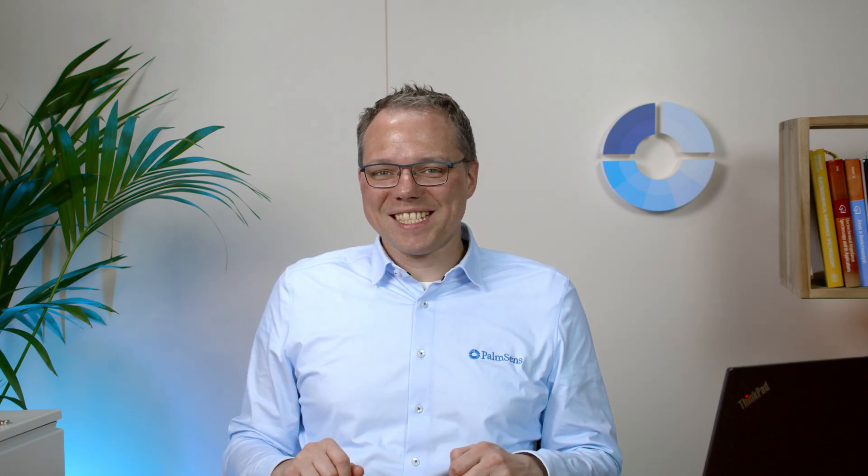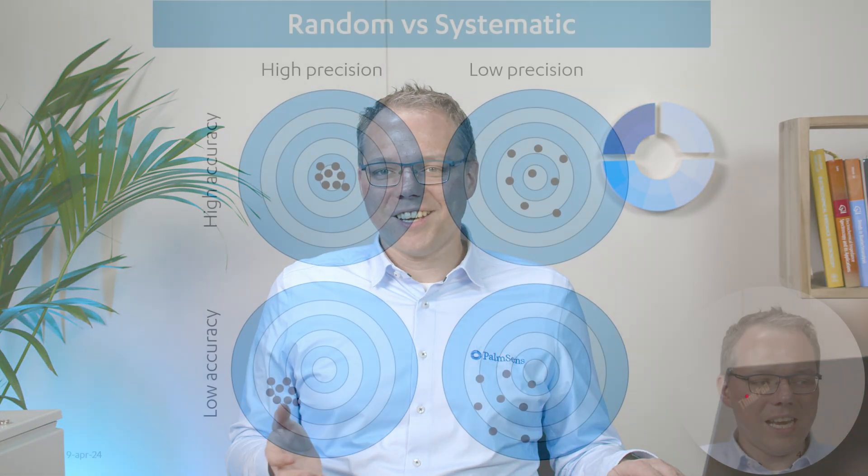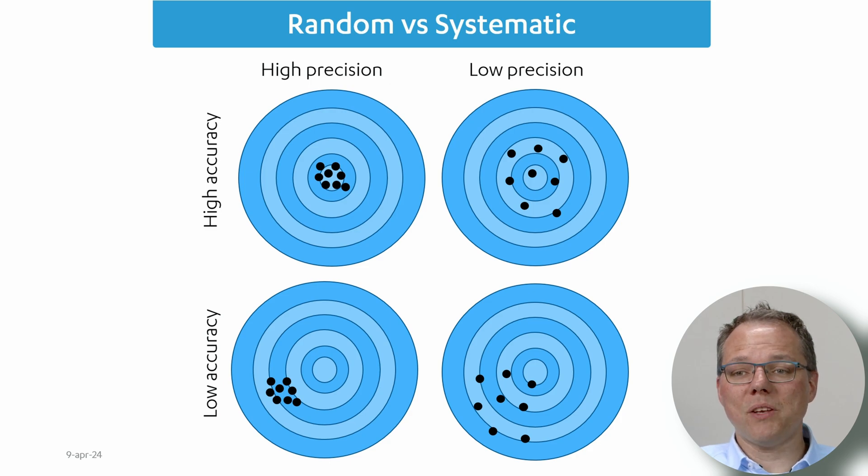That's already good news because there's a high probability that we're close to the true value. Another good news is that this distribution is symmetrical. In general you can say that multiple random influences in your lab usually adds up to a Gauss curve except one of them is dominating. Which means your noise is actually normally distributed.